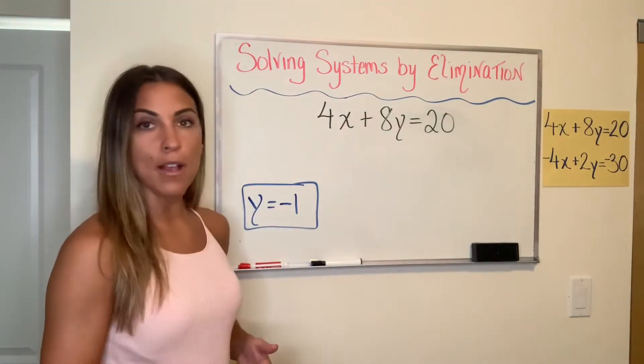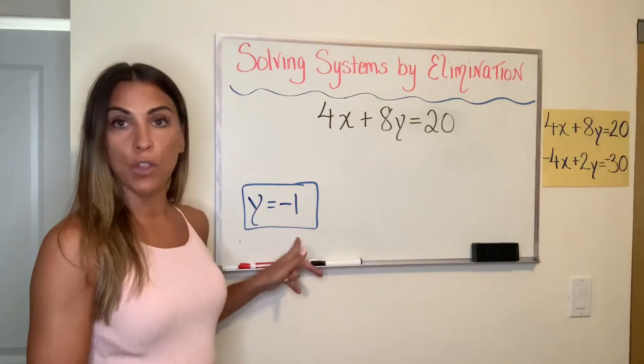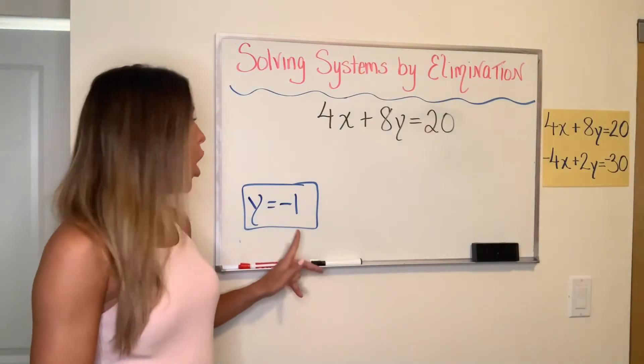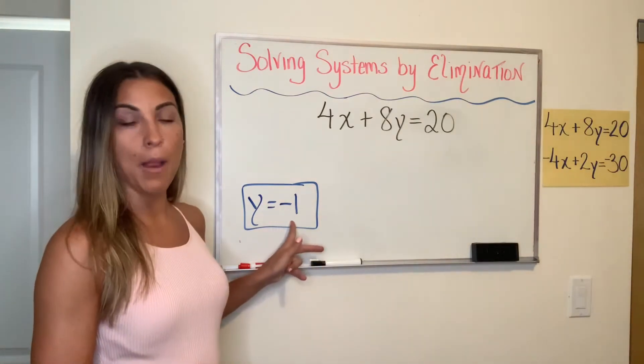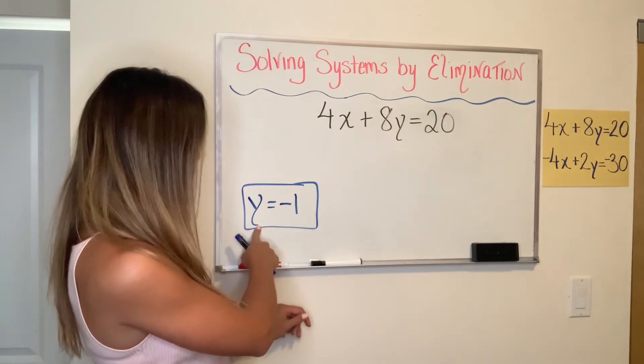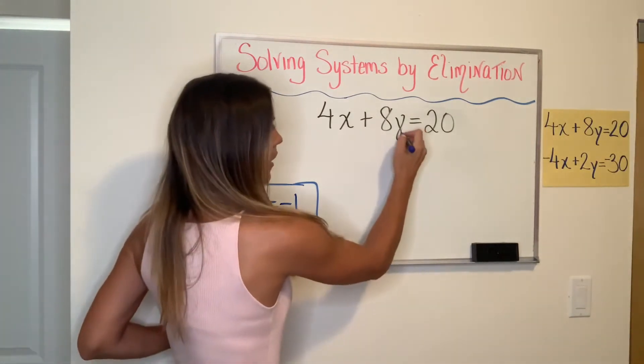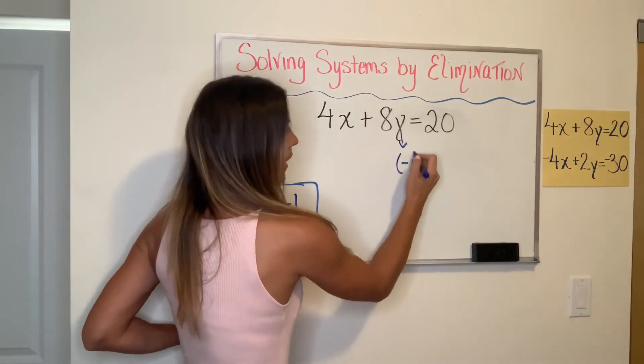The rest of this process is very similar to what you would have done for the substitution method. So once you have one of the coordinates of your solution, all you're going to do is substitute that back into one of the equations to find the other one. So I have the fact that Y equals negative 1.